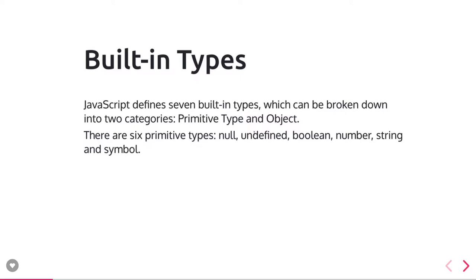These can be broken down into two categories: primitive type and object. Primitive types include undefined, boolean, number, and string. Functions are also first-class objects. Whatever objects we create in JavaScript are built-in JavaScript objects.